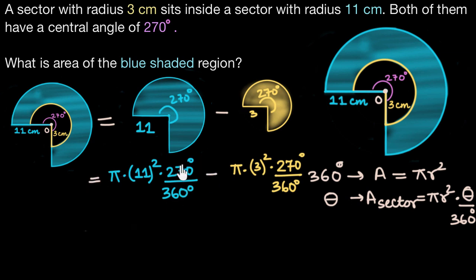Now let's simplify this so I can take 270 by 360 and π common out of these terms. So what I'll have here is 270 degrees by 360 degrees which is common, π, and then here in brackets I'll have 11 squared minus 3 squared and we know 11 squared is 121 and 3 squared is 9.